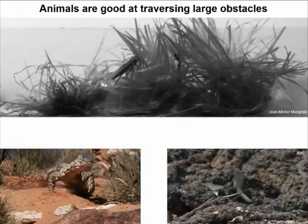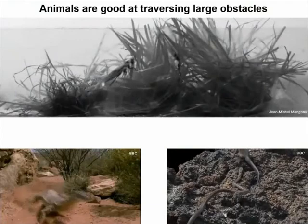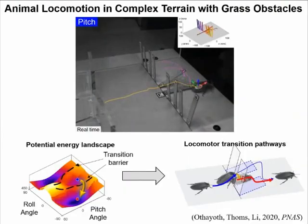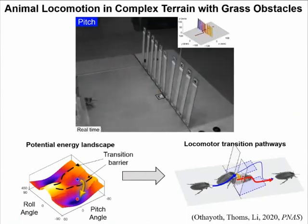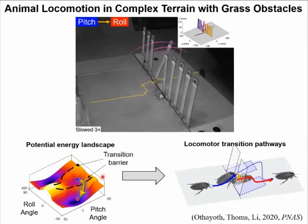As we all know, animals are good at traversing various obstacles. Our pre-study of the cockroaches shows when they meet grass-like obstacles, there will be different transitions during locomotions, and potential energy landscape could be a good tool to understand the motion. Our lab has more recent findings on this topic, and you may refer to the next two talks from Chihan and Lacheng.